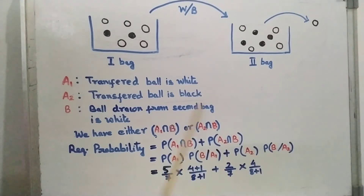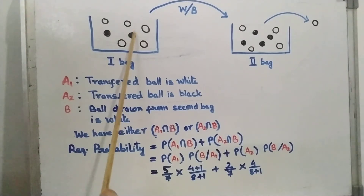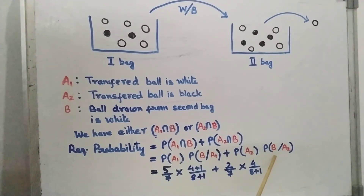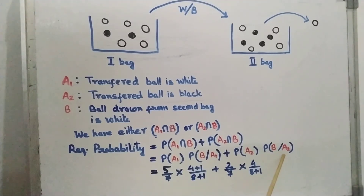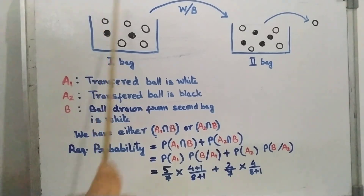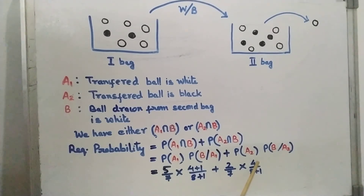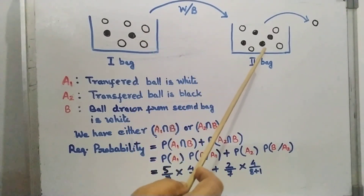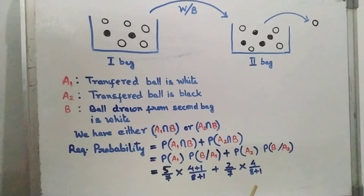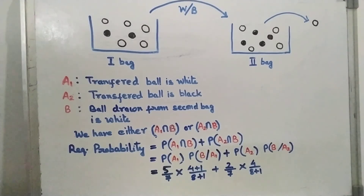Now, probability of A2: A2 means the transferred ball is black. There are 2 black balls out of 7 in bag one, so P(A2) is 2/7. For P(B|A2), the probability that the ball drawn from bag two is white given the transferred ball is black — since the transferred ball is black, there is no change in the white ball count, which remains 4. But the total number of balls increases by 1, giving 9. So P(B|A2) is 4/9. After evaluating, you will get the required result.